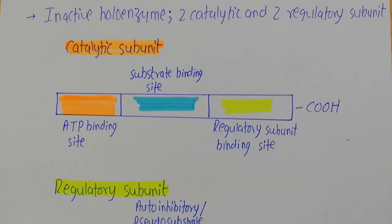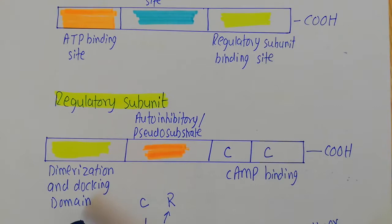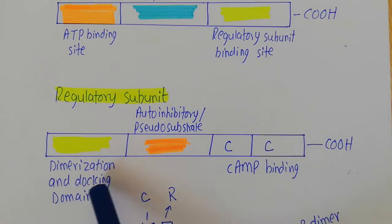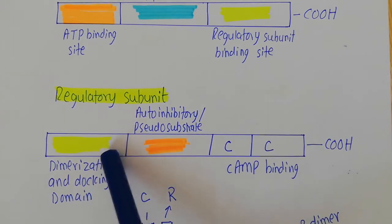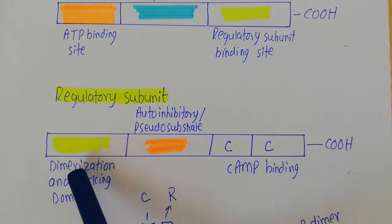When you talk about the regulatory subunits, they also have specific regions. One important region is known as the dimerization and docking domain - also called the docking and dimerization domain. We will discuss the function of this particular domain in a while.